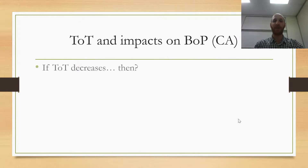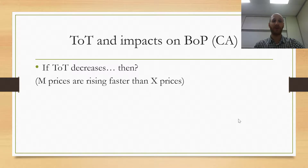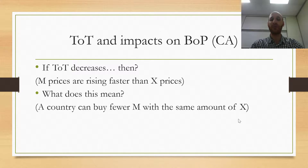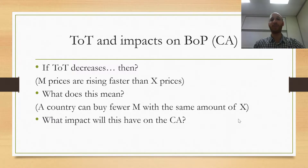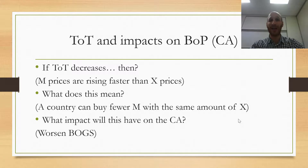If the terms of trade deteriorates or worsens, then import prices are rising faster than export prices. This means that a country can buy fewer imports with the same amount of exports. Imports are more expensive while exports are commanding a lower price, so we're spending more on imports than we're getting from exports. Therefore BOGS could worsen, and that in turn could worsen the balance on the current account.